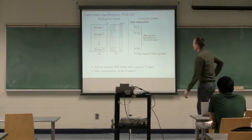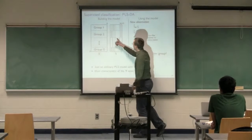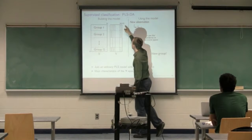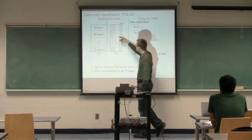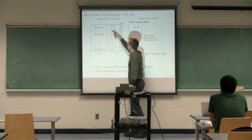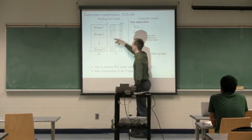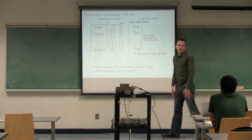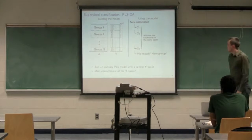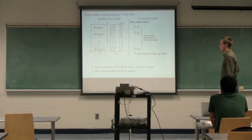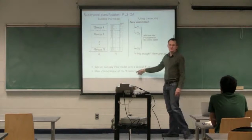What we do is we create a Y space with columns — as many columns as we have groups. So if we've got G groups, we create G new columns. We put a 1 in the first column corresponding to group 1, 1s in the second column for group 2, and so on. It's just a special Y space — and what is special about that Y space?